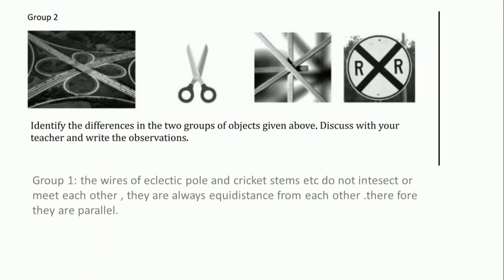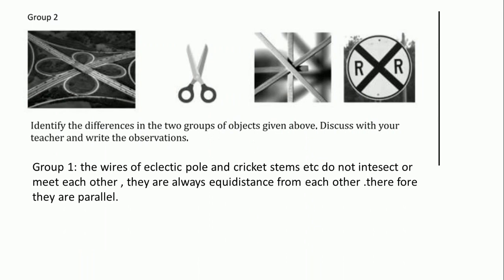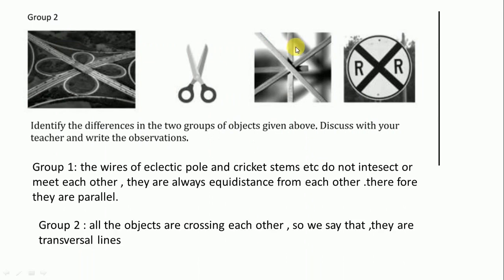In group 2 figures, all objects have a crossing symbol or crossing lines. So, all the objects are crossing each other. So, we say that they are transversal lines.